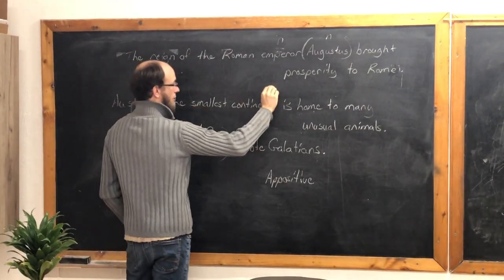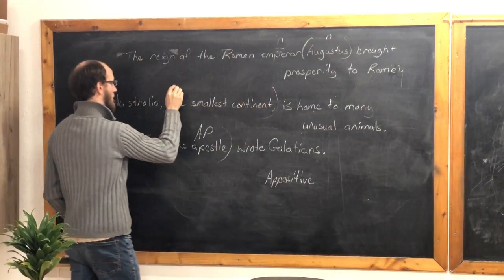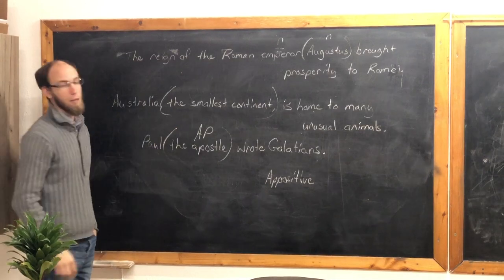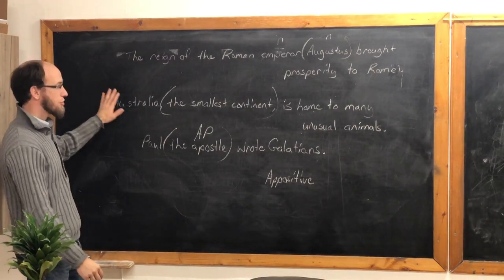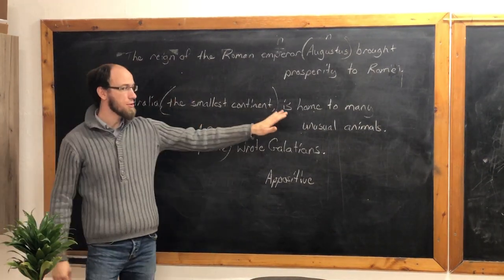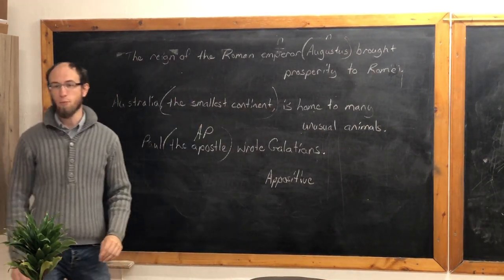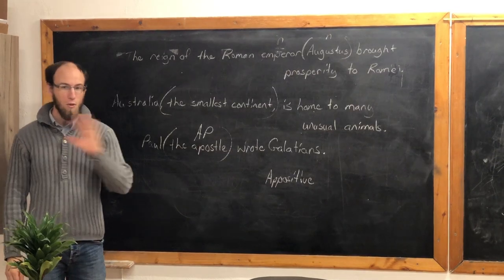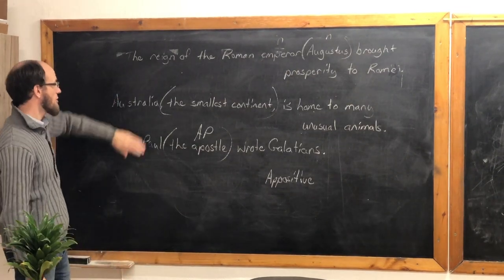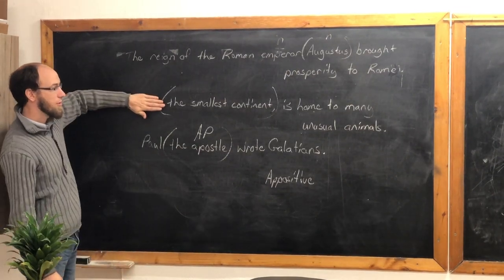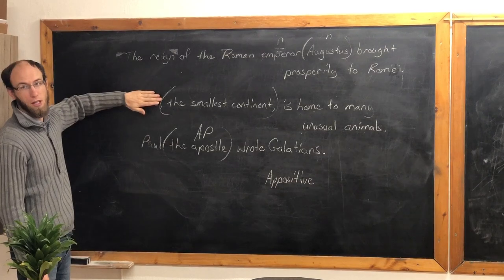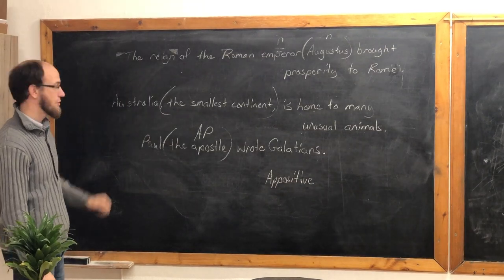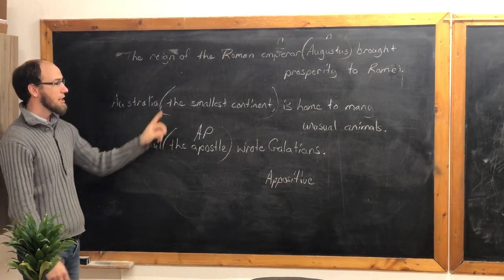Australia, the smallest continent. Now, can we take it out? Does that make sense? 'Australia is home to many unusual animals.' Yes. We can always remove appositives. Or we can also say 'the smallest continent is home to many unusual animals.'